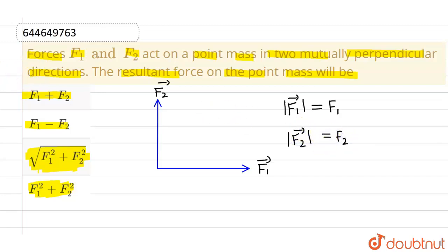Now we also know that the resultant of two forces is given by root over F1 square plus F2 square plus two F1 F2 cos theta where theta is the angle between them. But now in this particular case, they are perpendicular.